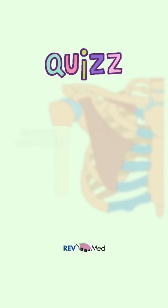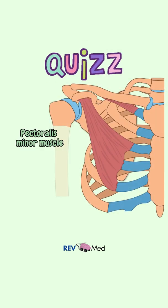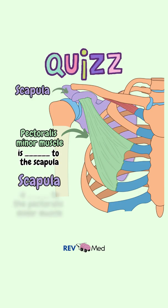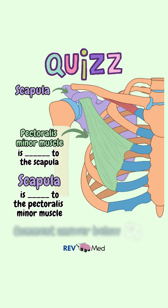Let's try this. The pectoralis minor muscle here is blank to the scapula, or the scapula is blank to the pec minor muscle. Comment below what you think.